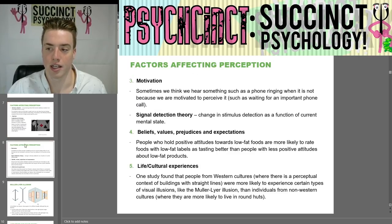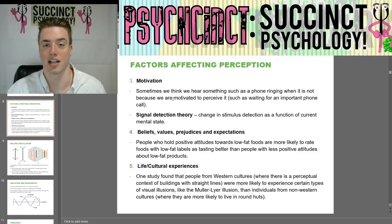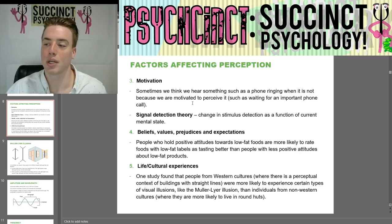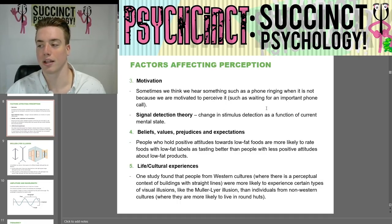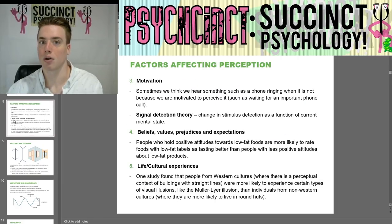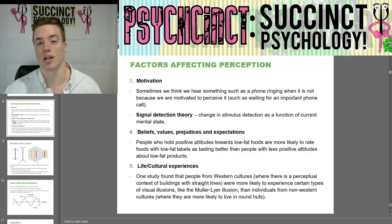Continuing with factors affecting perception, we have motivation. Sometimes we think we hear something such as a phone ringing when it is not, because we are motivated to perceive it — such as waiting for an important phone call. You might think your phone buzzed when it didn't, because you're motivated to perceive it. You're waiting to hear that phone ring or vibration.